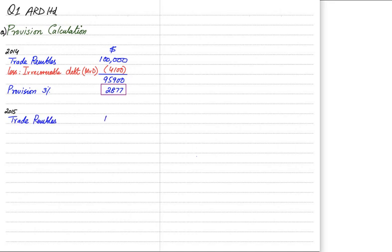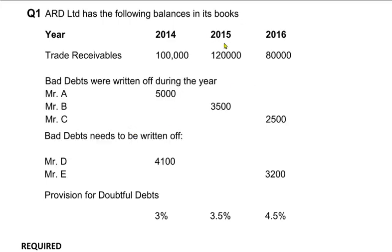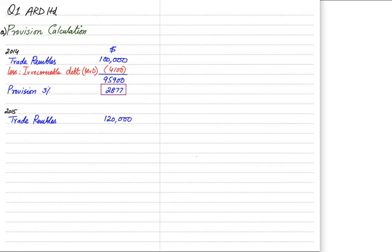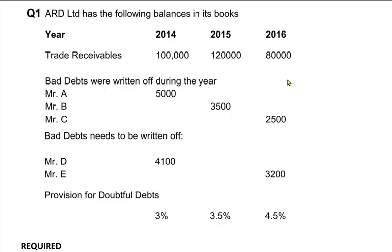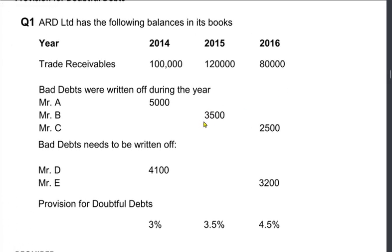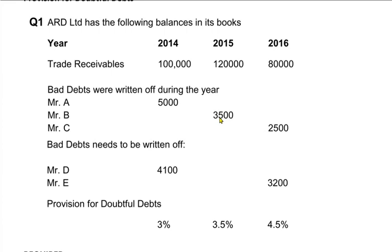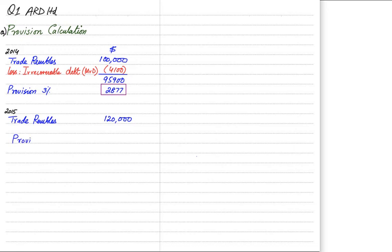This process is repeated for 2015. In 2015, trade receivables are 120,000. We need to deduct irrecoverable debt before applying provision for doubtful debt. In 2015, Mr. B is the only customer who turned bad and he was already written off — the examiner mentions bad debt were written off during the year. So we would not deduct Mr. B again. We just apply three and a half percent to 120,000, giving a provision of 4,200.